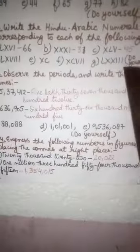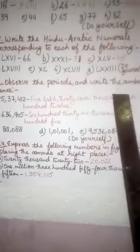These parts you have to do yourself. Question number 3. Observe the periods and write the number names. Now, you have to observe the periods. Periods means you have to know the place value chart Indian as well as international.